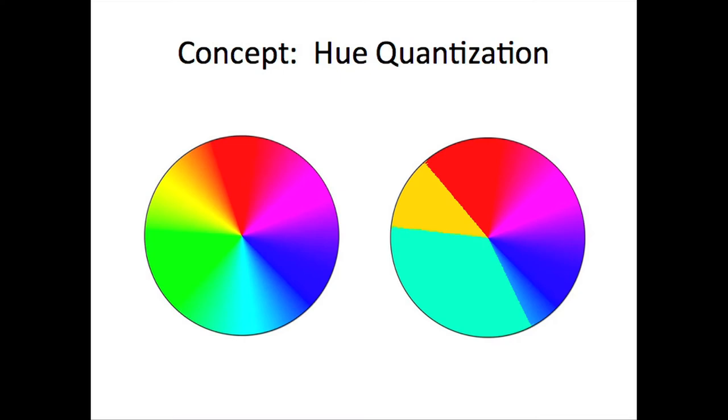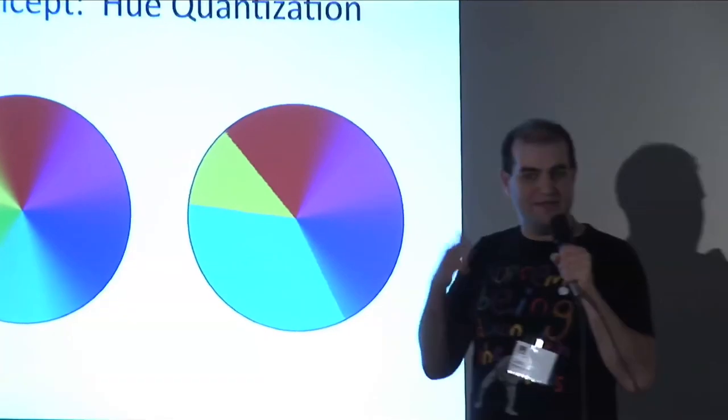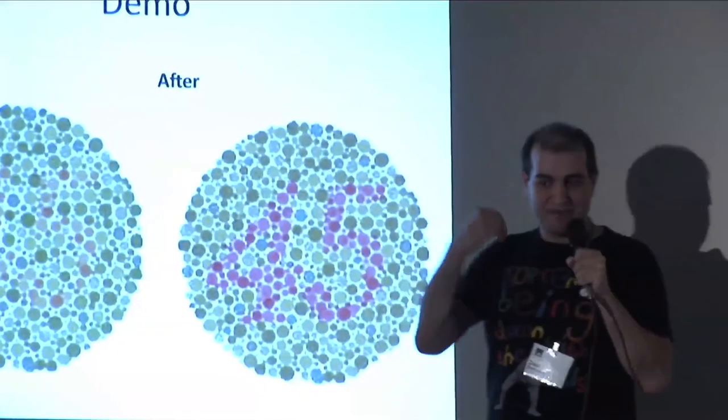So what I did was actually apply quantization to the hue channel. So I say I'm going to make all reds the same red, all yellows the same yellow, and all greens kind of a bluish green because that was the complaint a lot of color blind people had about stoplights.